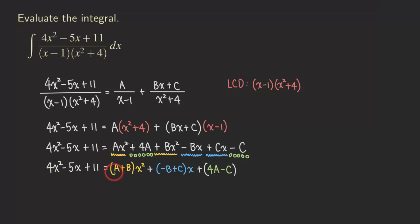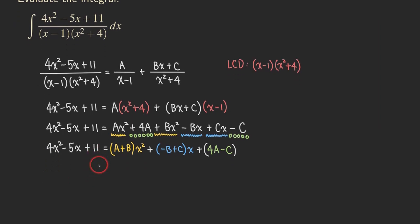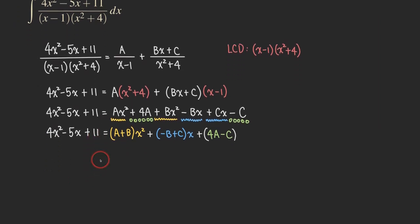So we have (A plus B) x squared, plus (negative B plus C) x, plus (4A minus C). We are getting a quadratic expression on this side, and we also have the quadratic expression on the other side. So that means if the two sides are equal and both sides are quadratic expressions, we are going to match the coefficients. The 4 is supposed to match the coefficient of x squared here, so A plus B must equal 4.